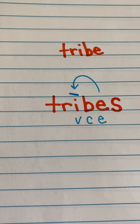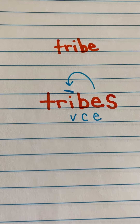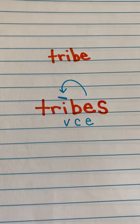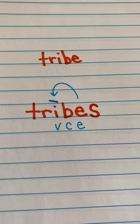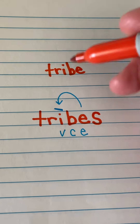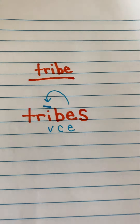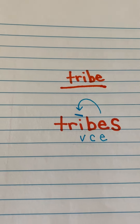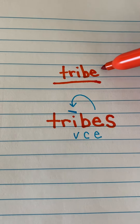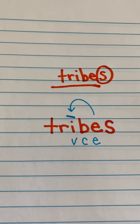If you notice, it did not change the spelling of our base word tribe. Our base word is tribe — we just added an S at the end. That's going to be our suffix.